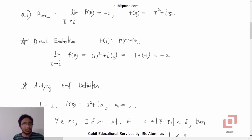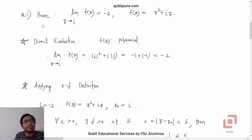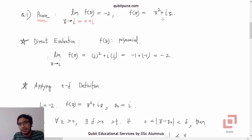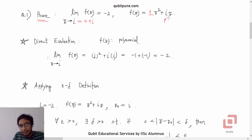In this problem, we are going to find the limit of a complex variable function using the epsilon and delta definition. The question says: prove that the limit of f(z) as z tends to i (or 0 + i) is −2, where f(z) is given by a polynomial in z. When we have a complex polynomial, both the coefficients and the variable can take complex values. For example, the coefficient of z² here is 1 and the coefficient of z is i, so f(z) = z² + iz.